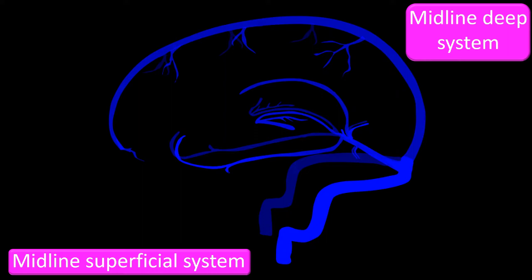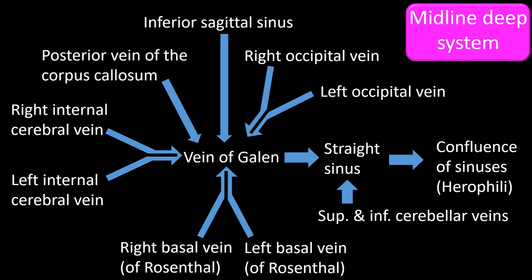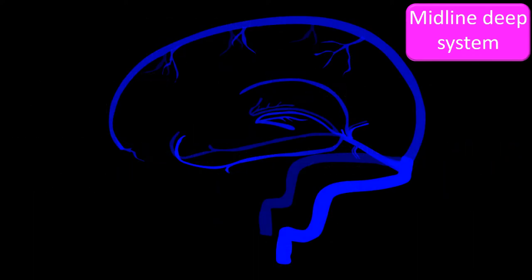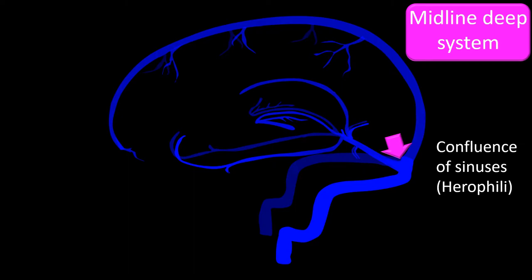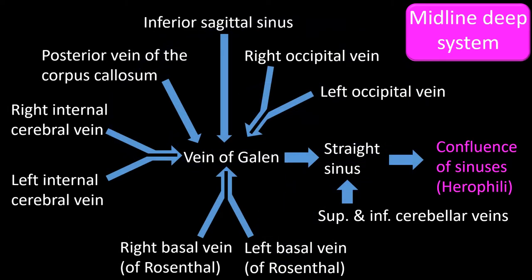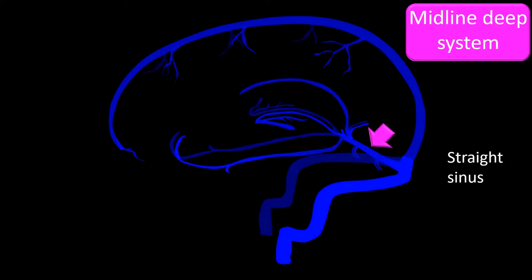The midline deep system is rather complex. I have constructed a chart to serve as a roadmap for introducing the most relevant components. The terms used are the most commonly used, though not universally so. As previously mentioned, the midline deep system drains into the confluence of the sinuses. The confluence of the sinuses is fed by the straight sinus, which in turn receives tributaries from the superior and inferior cerebral veins.